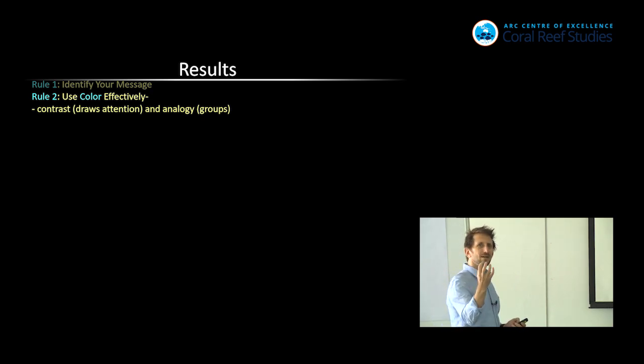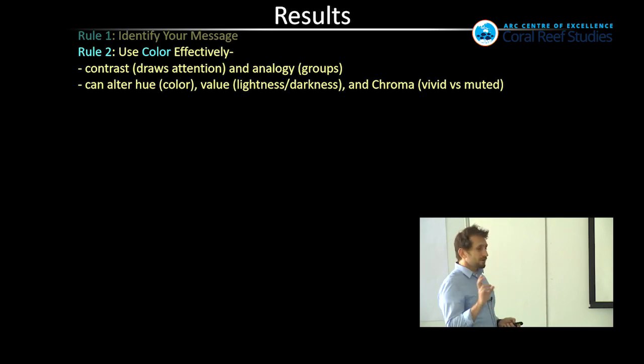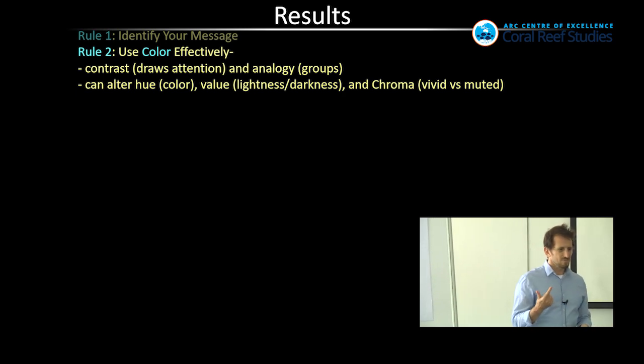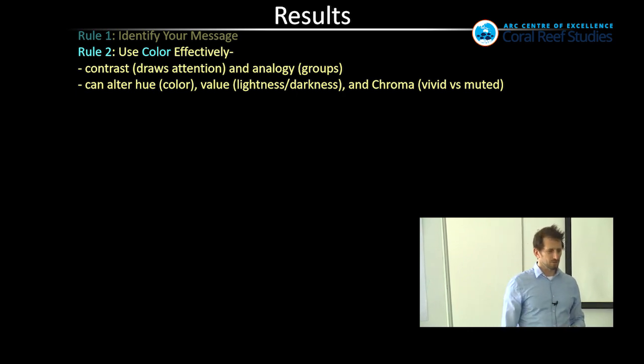So contrast draws attention and analogy. So those are the two things that you're trying to do with color. You're trying to either group things or contrast things. People don't realize that. And that's why they often use color very poorly because they don't know why they're doing it. They're not sure that what I'm actually trying to do is show that this is different from this. So let me use colors that show how different they are. There's a whole bunch of color theory on how you can make things look more different. There are only three things that you can vary in color. You can alter the hue, the value, which is the sort of lightness and darkness, and the chroma, which makes it more vivid or more muted. Those are the three bits that you can alter in color.